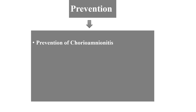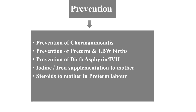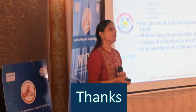Prevention of cerebral palsy: in the antenatal period — prevention of chorioamnionitis, preterm birth, low birth weight, birth asphyxia, and intraventricular hemorrhage. Iodine and iron supplementation should be given to the mother. Steroids should be given to the mother in preterm labor. Magnesium sulfate given to the mother is associated with lower chances of developing CP. Drugs to prevent seizures will be discussed in the next lecture.